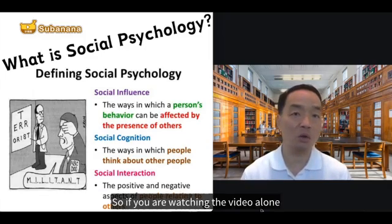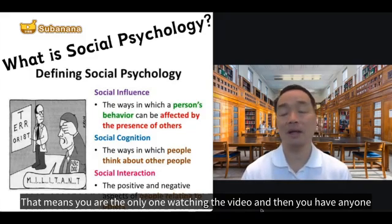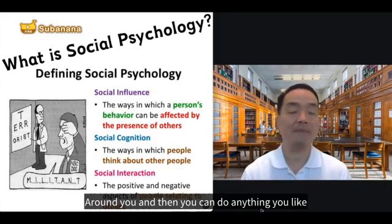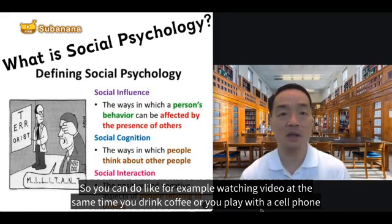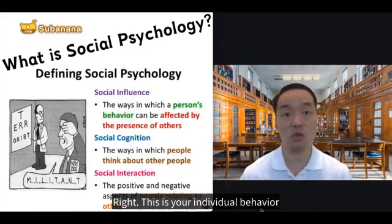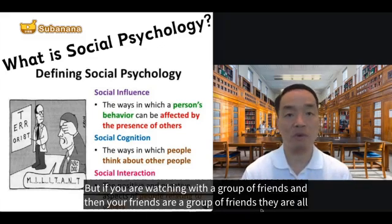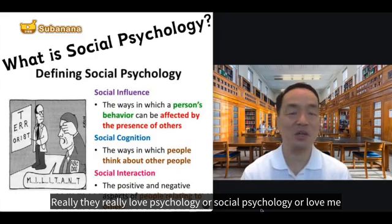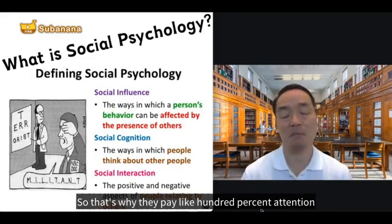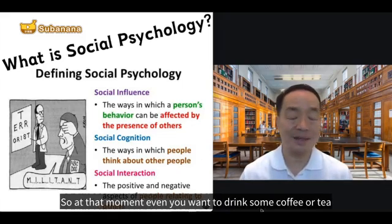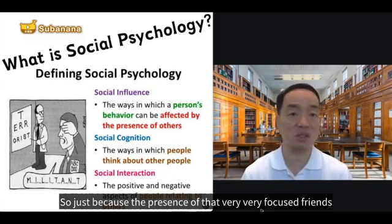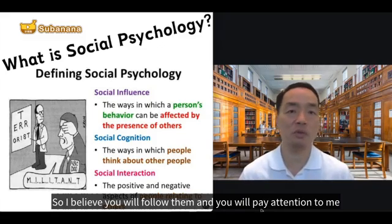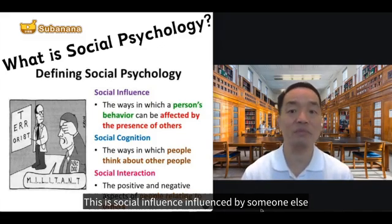If you are watching the video alone, you are the only one watching and you can do anything you like — for example, drinking coffee or playing with your cell phone. This is your individual behavior. But if you are watching with a group of friends who really love psychology and pay 100% attention, then even if you want to drink coffee or tea, just because of the presence of those very focused friends, I believe you will follow them and pay full attention. This is social influence.